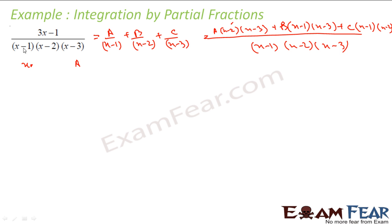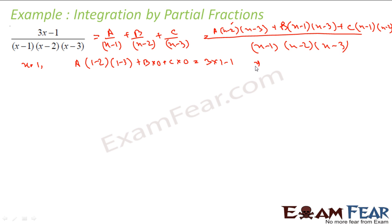Put x = 1: we get A(1 − 2)(1 − 3) = 3(1) − 1, so A(−1)(−2) = 2, giving 2A = 2, so A = 1. Put x = 2: we get B(2 − 1)(2 − 3) = 3(2) − 1, so B(1)(−1) = 5, giving −B = 5, so B = −5.